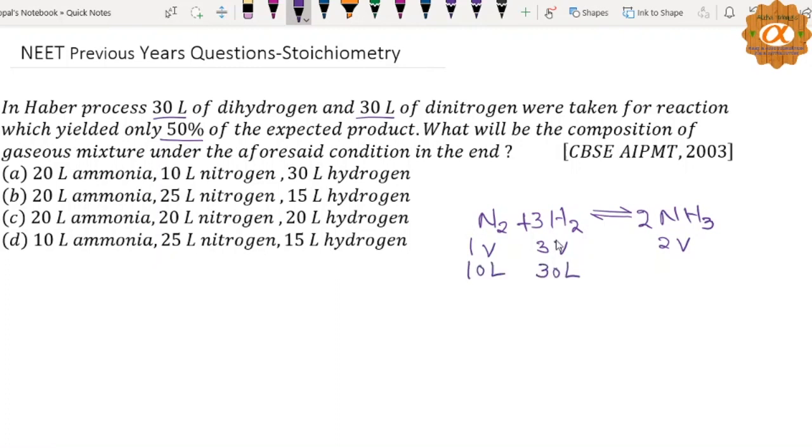How much is needed? 10 liters of nitrogen. How much should be produced? 20 liters should be produced, but the yield is 50 percent. That means ammonia produced equals 10 liters - half will be produced.